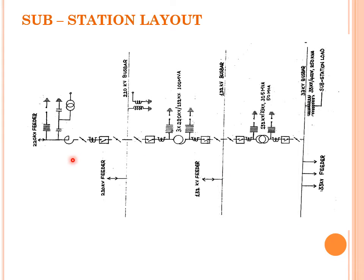The 32 kV level is the nearest substation to our houses. You can see these are the feeders or buses. On both sides of the incoming feeder or buses you can see isolators and circuit breakers. Isolators are no-load switches whereas circuit breakers are on-load switches. Whenever any fault comes, the circuit breaker trips first, after which you can operate your isolators.